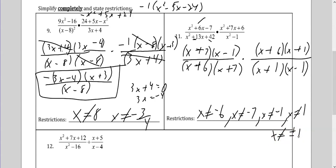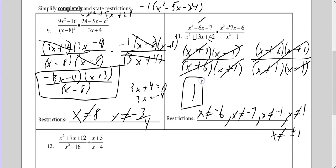Now let the fun begin. x plus 1s cancel. x plus 6 cancel. x plus 7s cancel. x minus 1s cancel. Everything cancels. What's my answer? 1. Just 1. That's it.